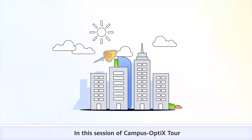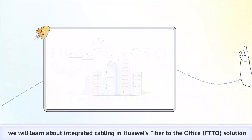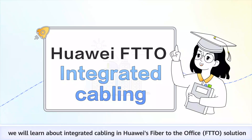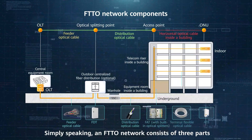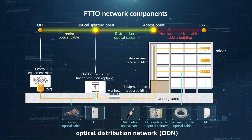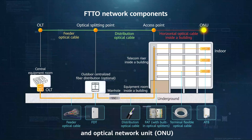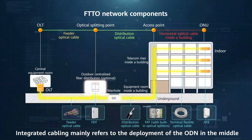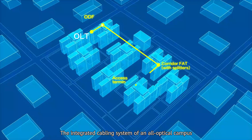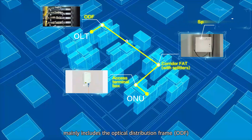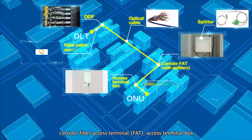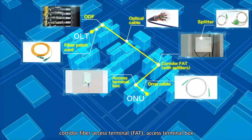In this session of Campus Optics Tour, we will learn about integrated cabling in Huawei's fiber to the office solution. Simply speaking, an FTTO network consists of three parts: optical line terminal, optical distribution network, and optical network unit. Integrated cabling mainly refers to the deployment of the ODN in the middle. The integrated cabling system of an all-optical campus mainly includes the optical distribution frame, corridor fiber access terminal, access terminal box, and components such as splitters, fibers.